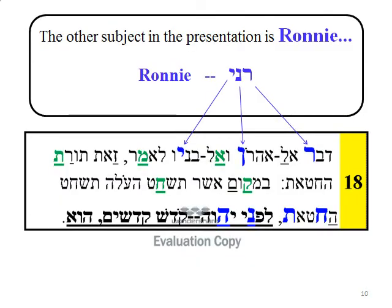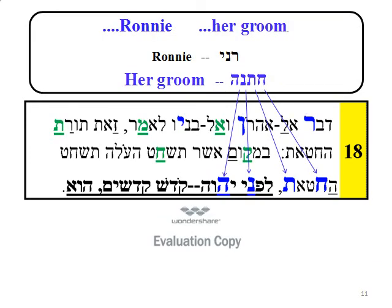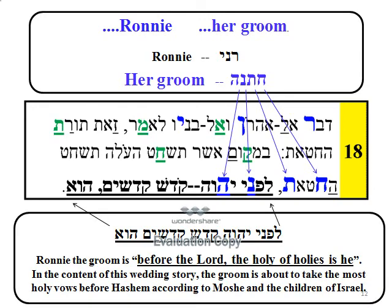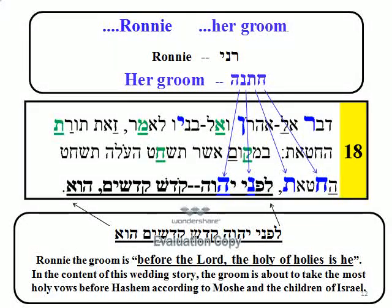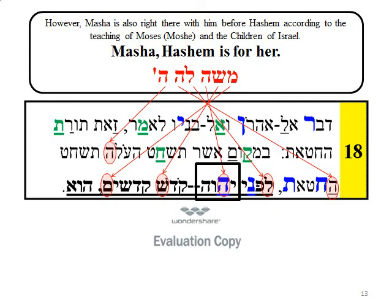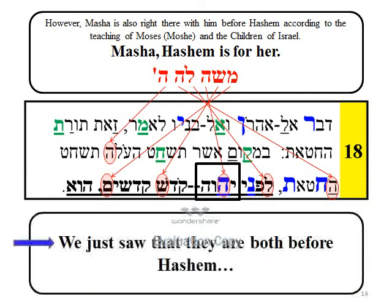The other subject in the presentation is Roni. Roni chatana, or Roni her groom. Roni the groom is before the Lord — the Holy of Holies is he. In the content of this wedding story, the groom is about to take the most holy vows before Hashem according to Moshe and the children of Israel. Masha is also right there with him before Hashem according to the teachings of Moses and the children of Israel. Masha — Hashem is for her.